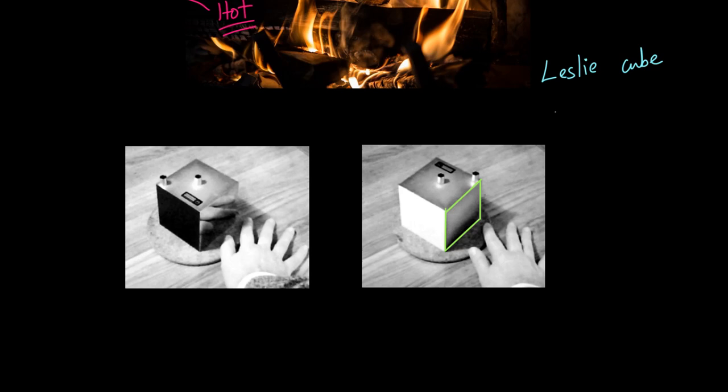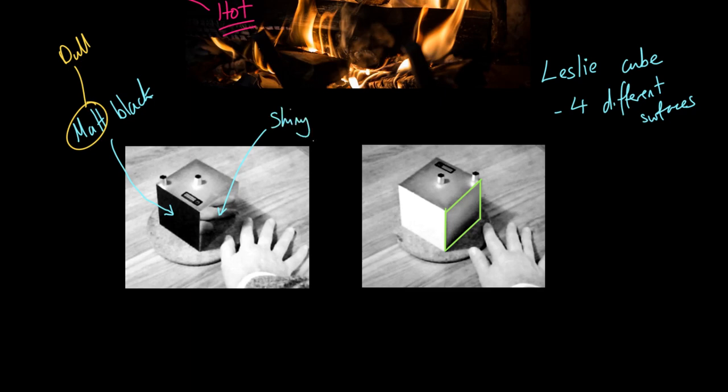So what are we looking at? We're looking at a cube and it has four different surfaces. This is photographed from both sides. This first side over here, that is a matte black surface. By matte I mean dull, in case you didn't know. This over here, that's a shiny metallic surface.